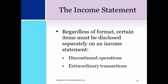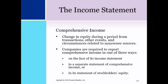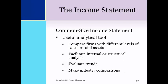Certain special items, if they occur during an accounting period, must be disclosed separately on an income statement regardless of the format. These are discontinued operations and extraordinary transactions. Most companies report comprehensive income, which is the change in equity of a company during a period from transactions, other events, and circumstances relating to non-owner sources. Companies are required to report total comprehensive income in one of three ways: on the face of the income statement, in a separate statement of comprehensive income, or in its statement of stockholders' equity.